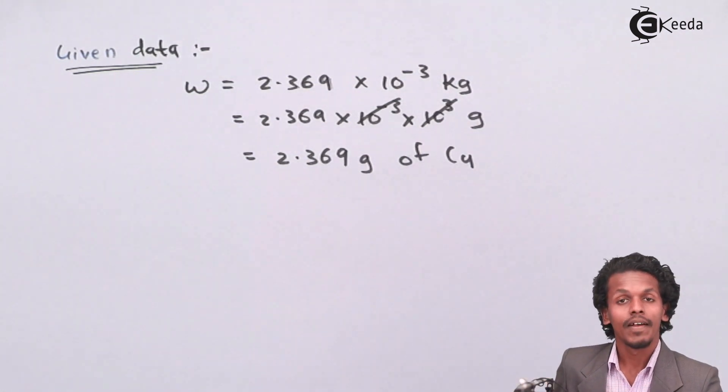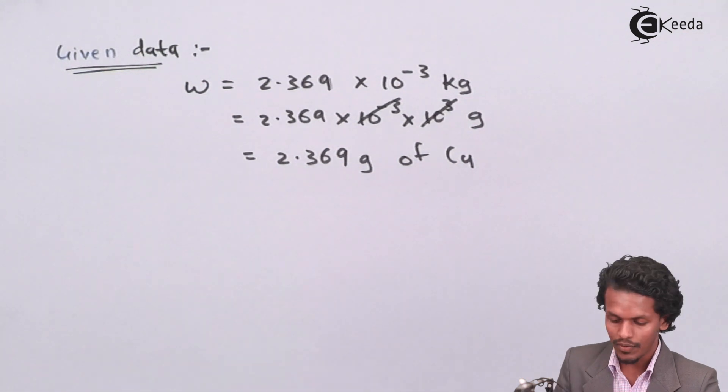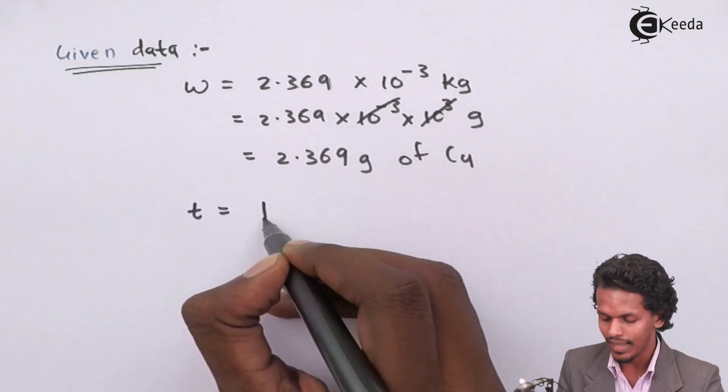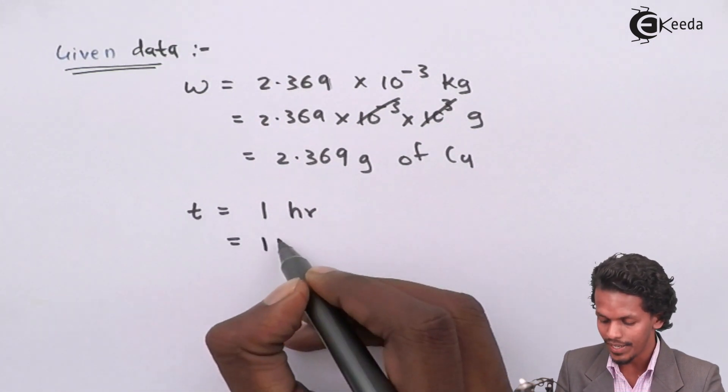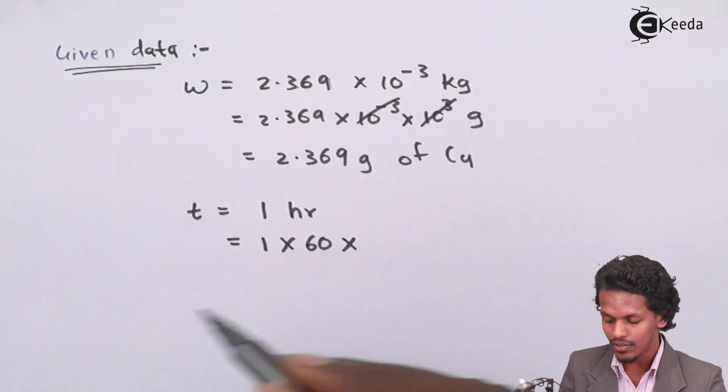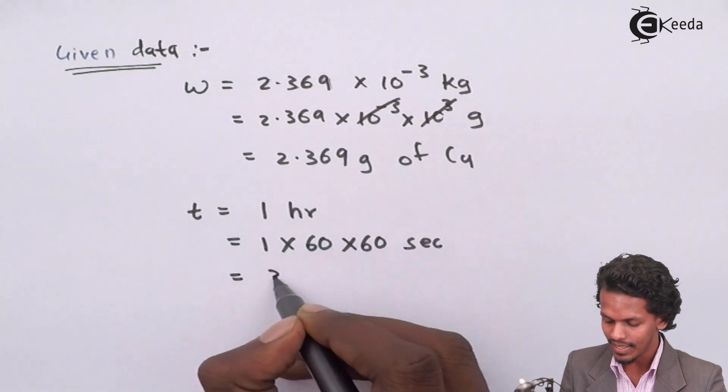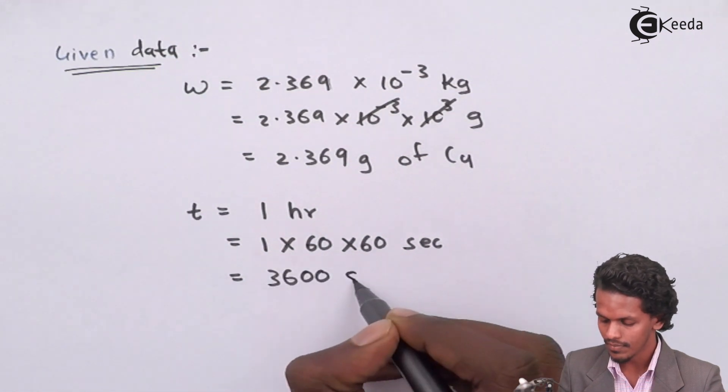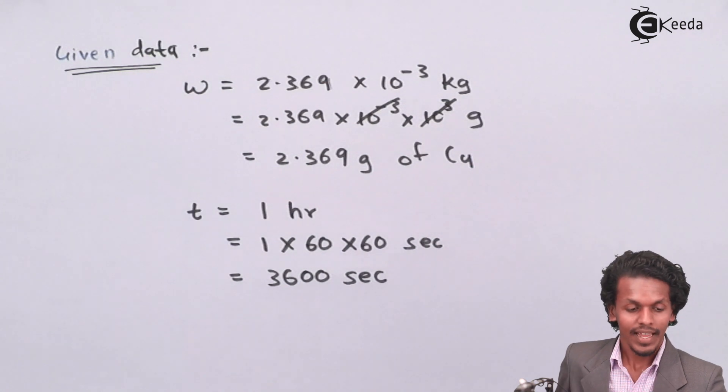The next one is the time required was 1 hour. Therefore, the time which is mentioned as 1 hour should be converted into minutes, so 1 × 60 minutes, that can be converted into seconds also. So eventually, we will get an answer as 3600 seconds.